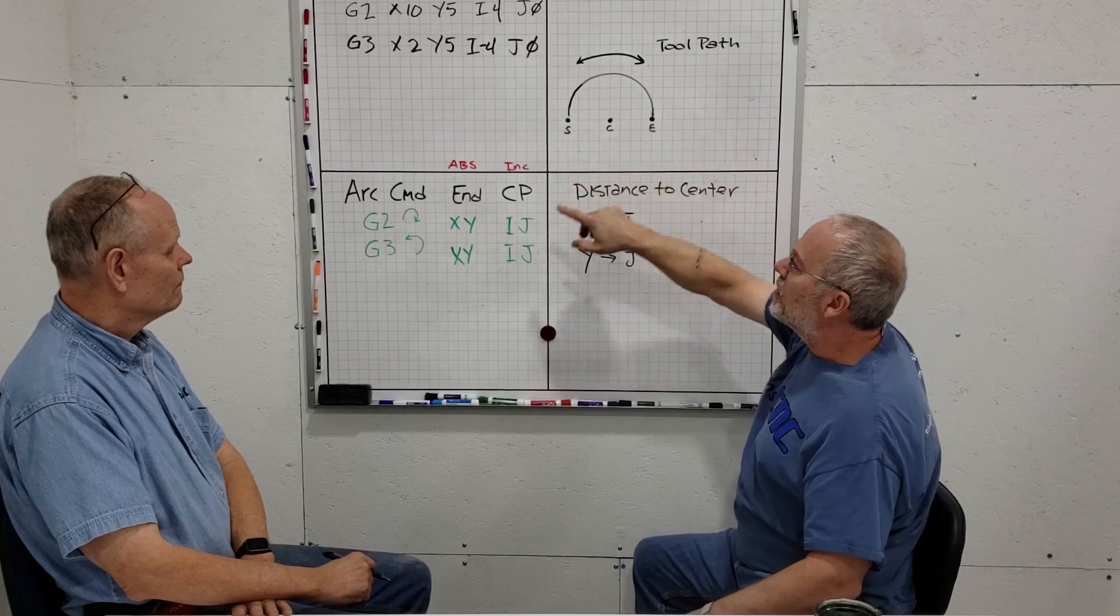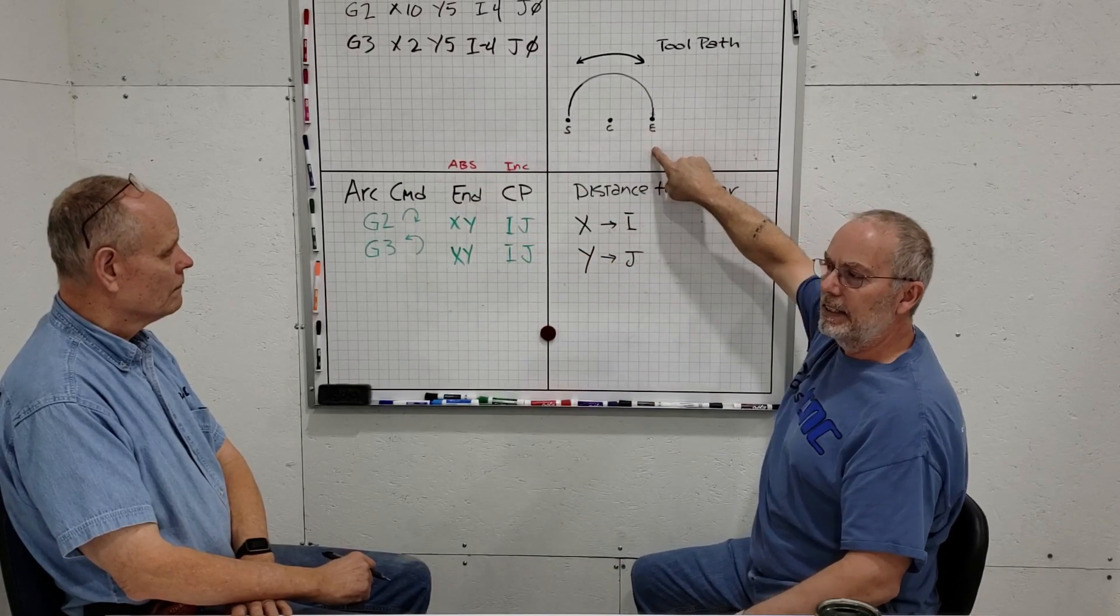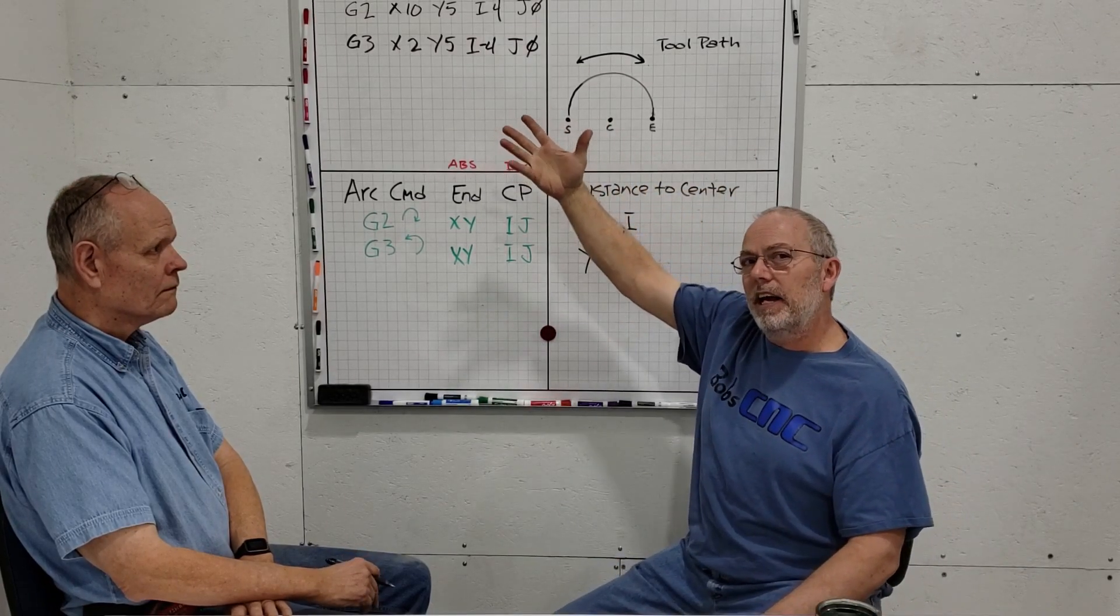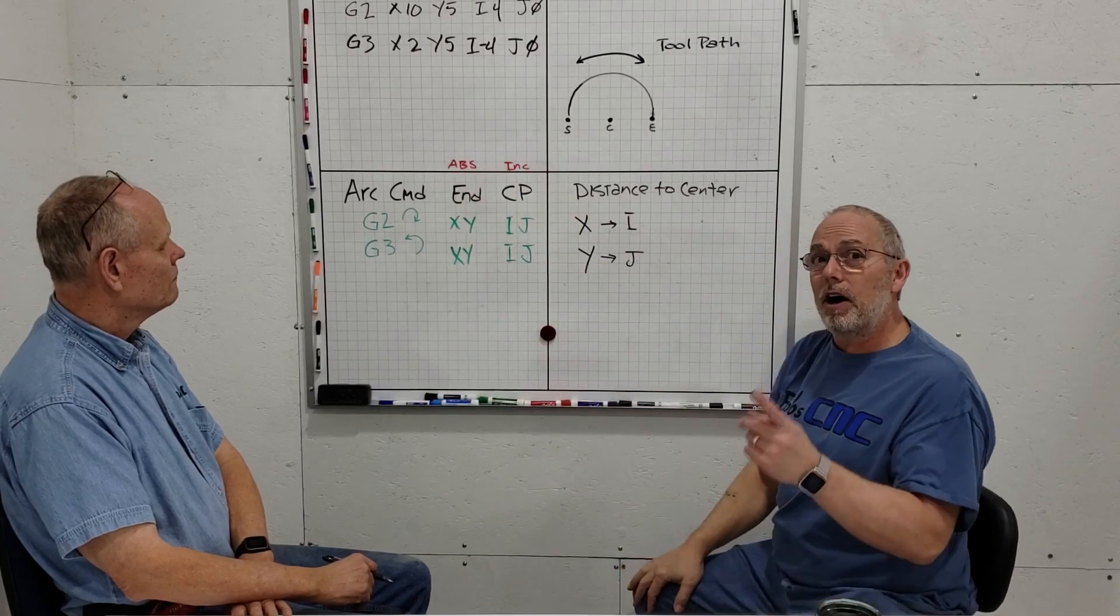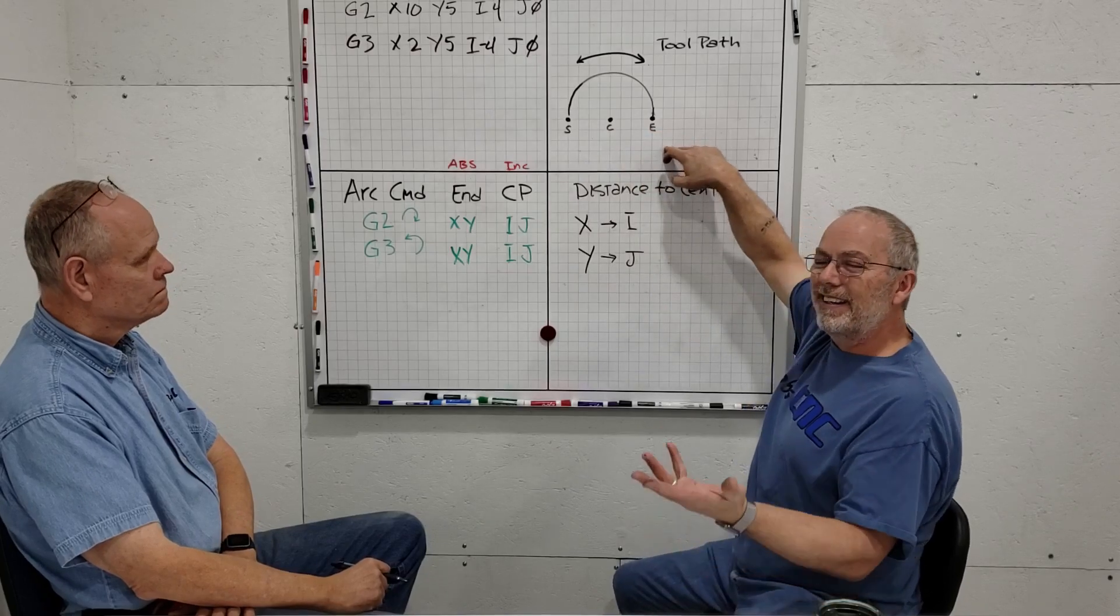Like the other movement G-code commands, we have to tell it where it's going. If this is our start point and we have a G2 command, this would be our end point. The end command is the XY point of where it ends, not to be confused with where it starts, because that's actually covered in the G-code before that.